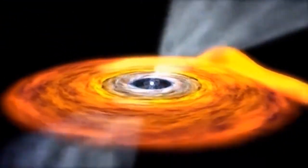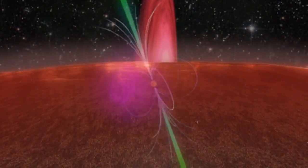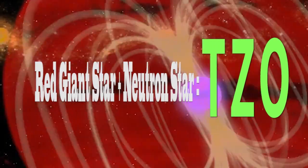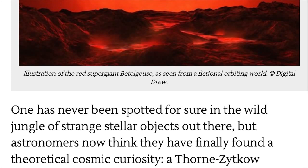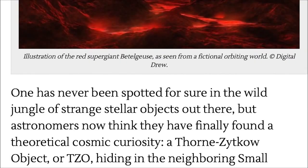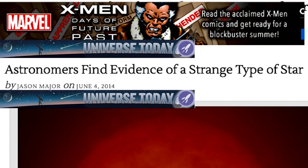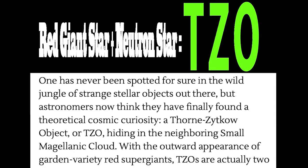About a year ago I did a story on when neutron stars and red giants converge, called the Thorne-Żytkow star. They found a new star, it's two stars in one, it's twice the light and energy. It's a TZO. It's got like a super red giant and a neutron star, it's like a shampoo and a conditioner. One has never been spotted for sure in the wild jungle of strange stellar objects out there, but astronomers now think they have finally found a theoretical cosmic curiosity, a Thorne-Żytkow object, hiding in the neighboring Small Magellanic Cloud.